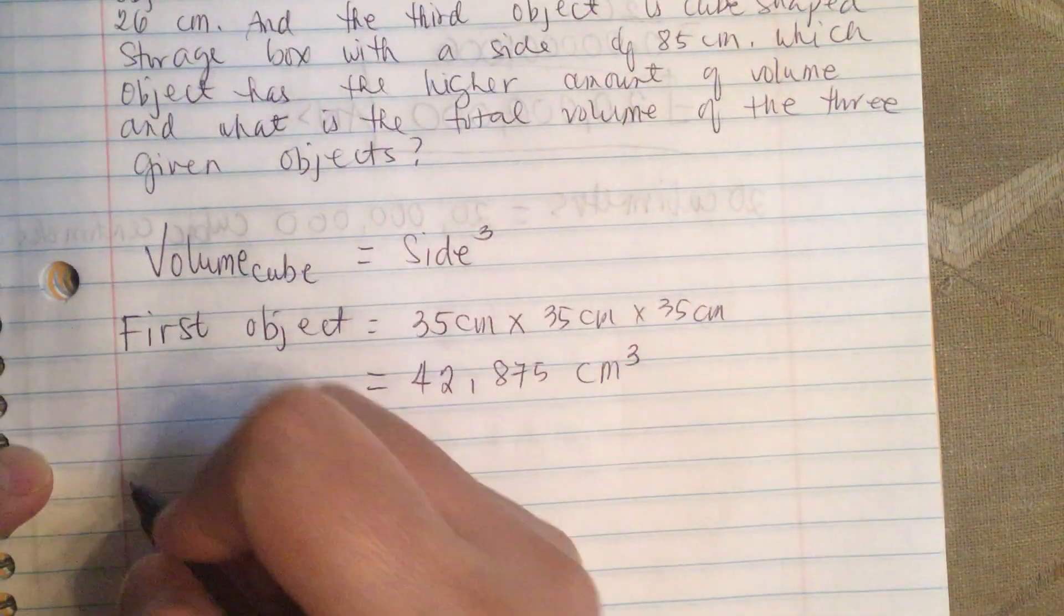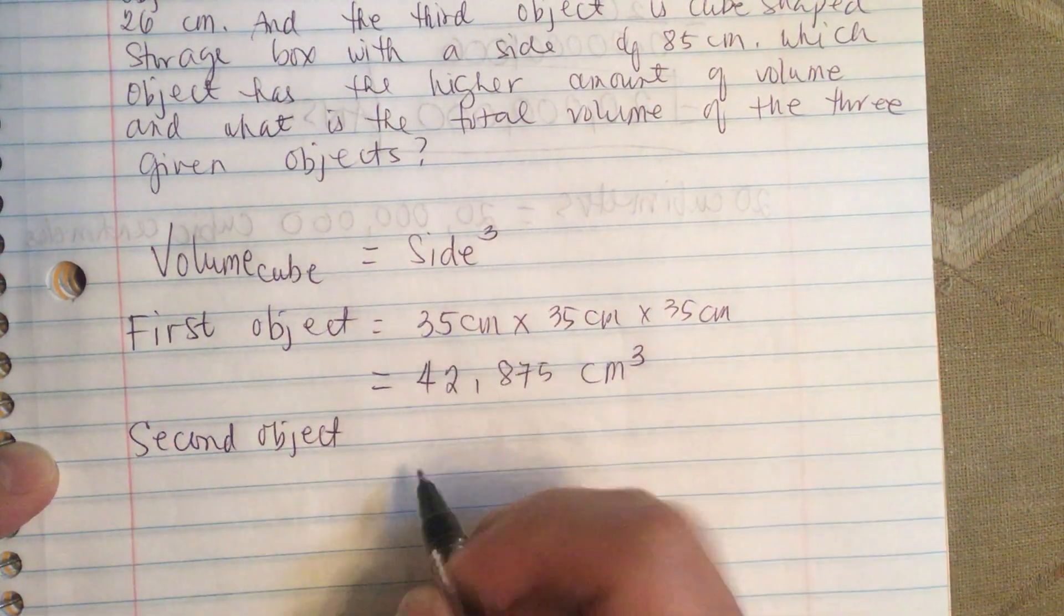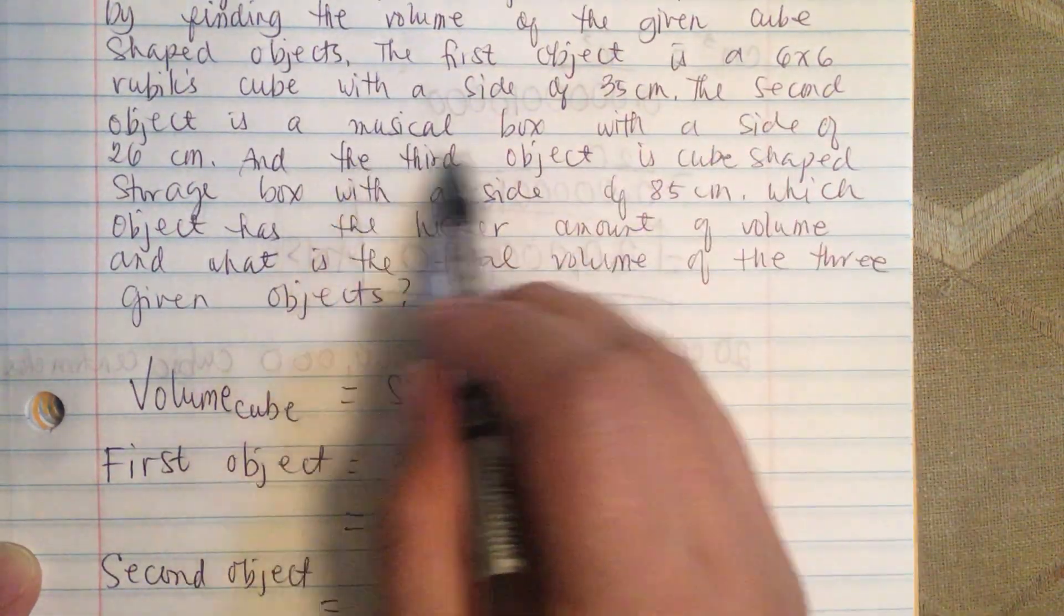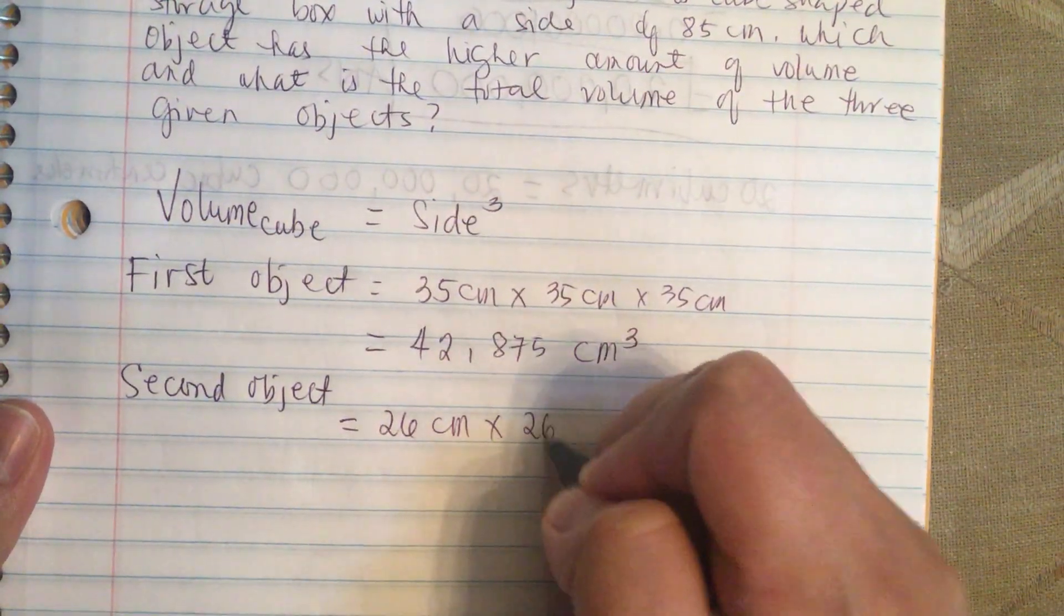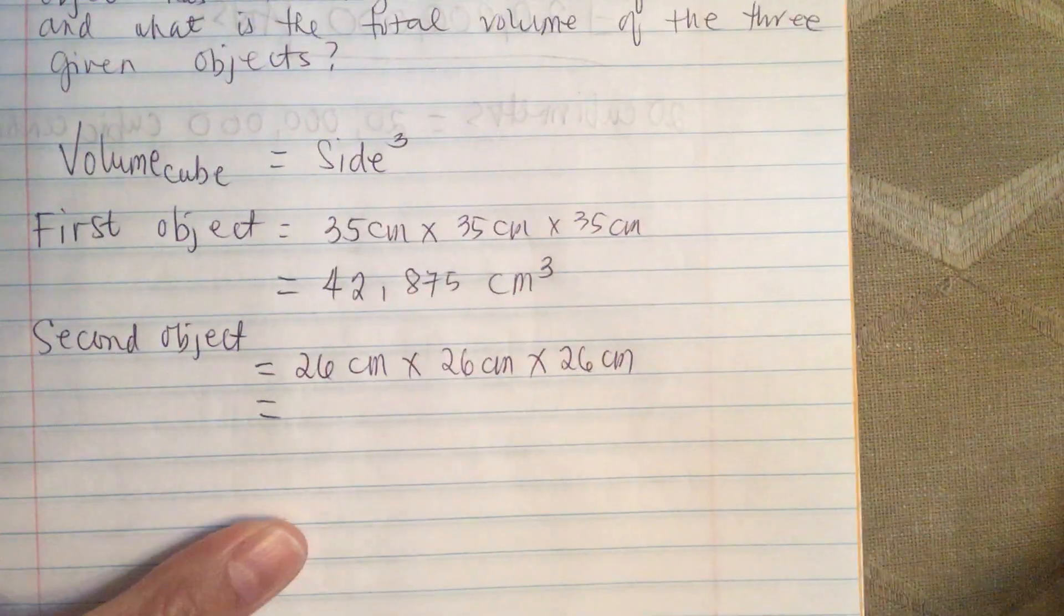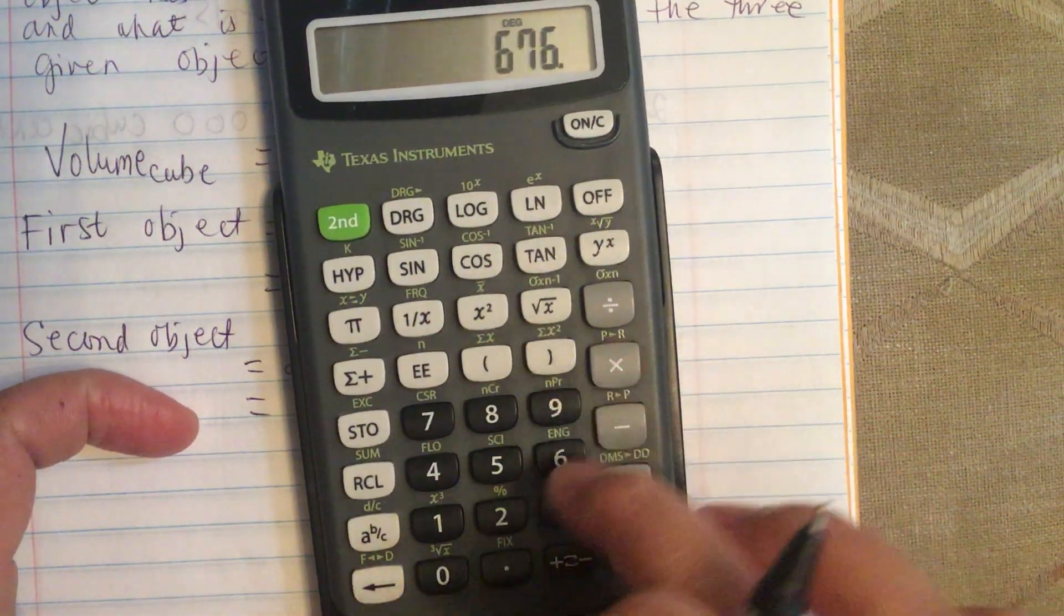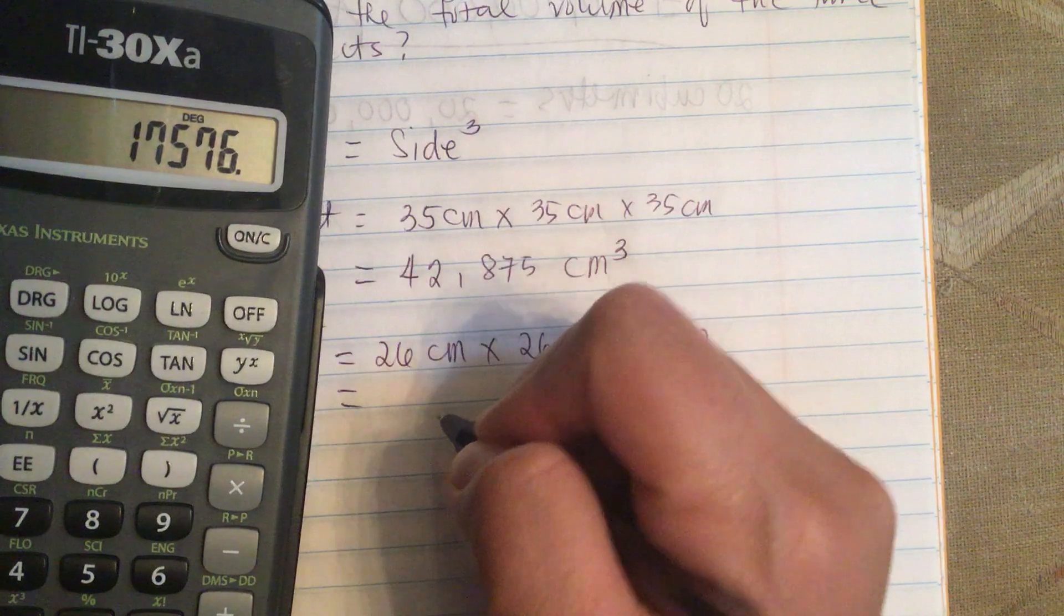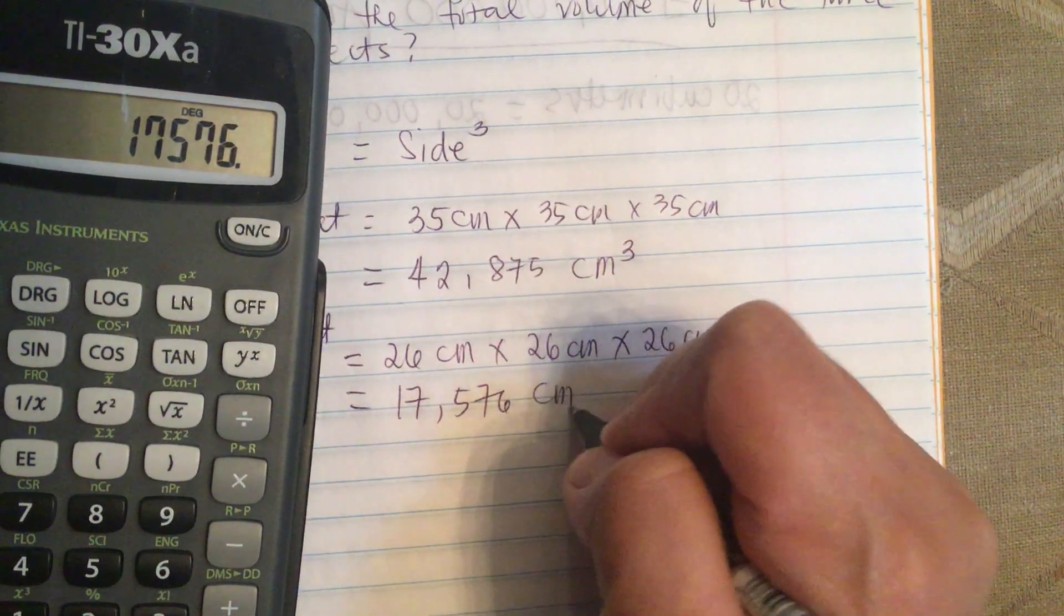Now the second object is equal to 26 centimeter by 26 centimeter by 26 centimeter. So this is equal to 17,576 cubic centimeter.